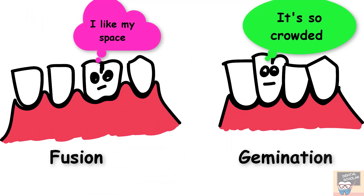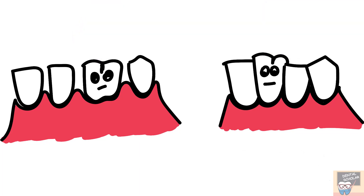Next is arch spacing. In case of fusion, since two adjacent teeth fuse together, more space might be seen in the arch. Whereas in case of gemination, since a normal tooth splits to form an extra tooth, crowding is usually seen.